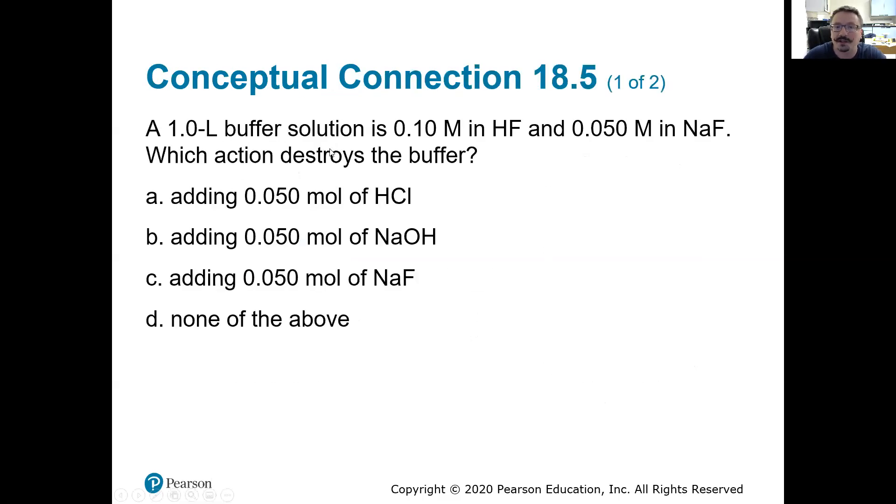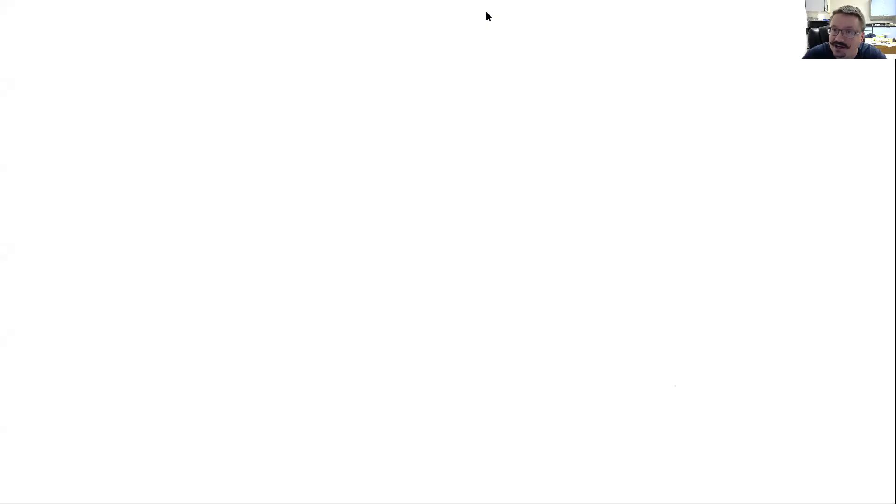So let's look at this example here. We have a one liter buffer solution. It's 0.1 molar hydrofluoric acid and 0.05 molar sodium fluoride. So we're going to try and add three different things to it. And we're going to see which one of those would destroy this buffer or would take us outside of the buffer effectiveness. So we had 0.10 molar HF. And we had 0.05 molar NaF. Well, that NaF, when we add it into solution, it's an ion, it's going to dissociate. It's going to give us Na plus ions. And it's also going to give us F minus ions, which is right there, the conjugate base of our weak acid. So that gives us our buffer solution. Now, they give us a couple examples. They say, what if we add NaF? Or what if we add NaOH?